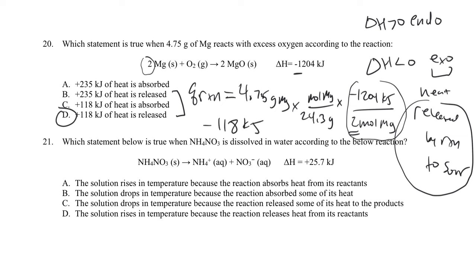Heat is easier to track when talking about where it goes. We could ask for Q reaction (which would be -118), but it's more meaningful to say: the heat came from the reaction to the surroundings. 118 kilojoules was released to the surroundings.